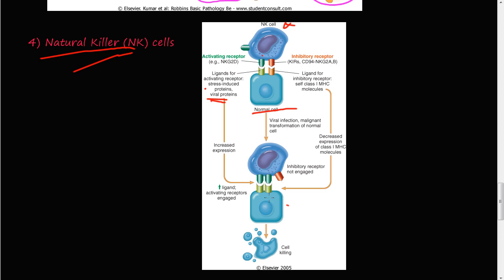So that when this natural killer cell bumps into one of your normal cells, if there's not this inhibitory receptor here, then it will activate it and it will engulf it and destroy it. So there's a decreased expression of the class 1 MHC molecules when one of your normal cells has a viral infection or a malignant transformation.